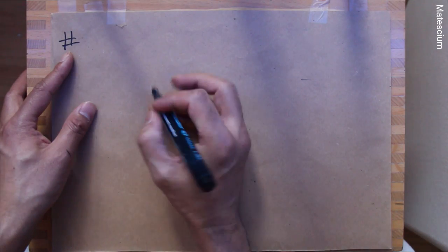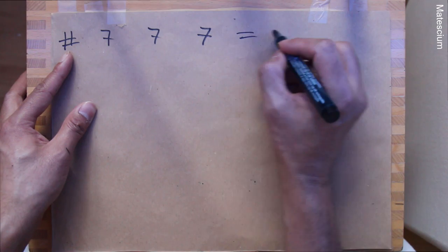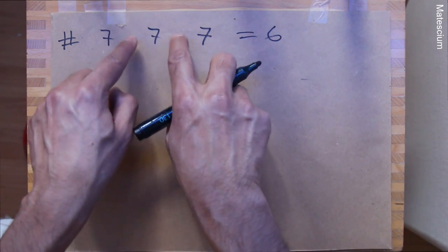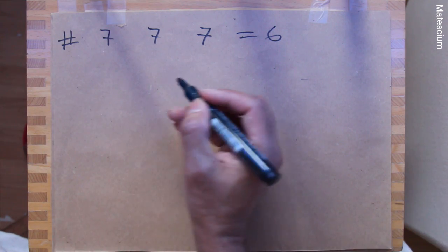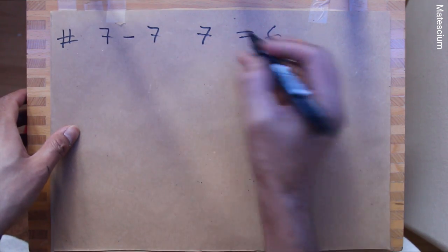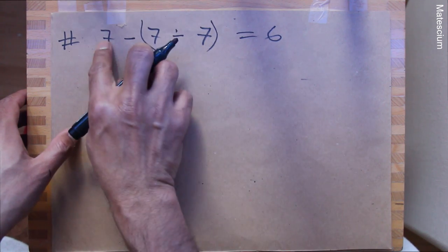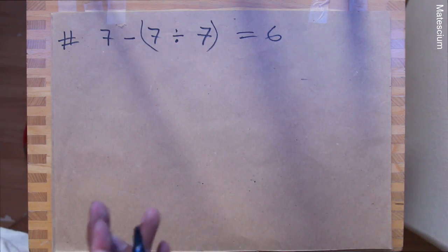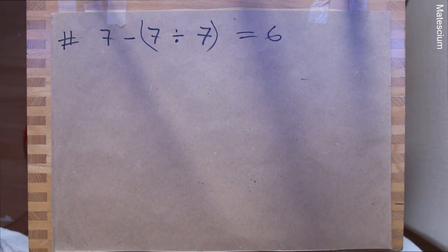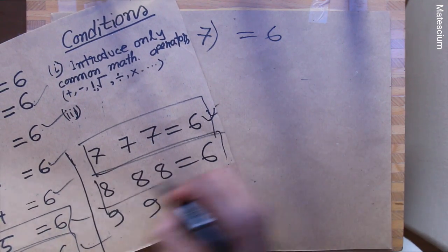This is number seven: seven, seven, and seven, which equals six. I introduce a minus sign here and a division sign here. That means seven minus seven over seven equals one — seven minus one equals six. That is true. Number seven is also proved. Now I'm going to prove number eight.